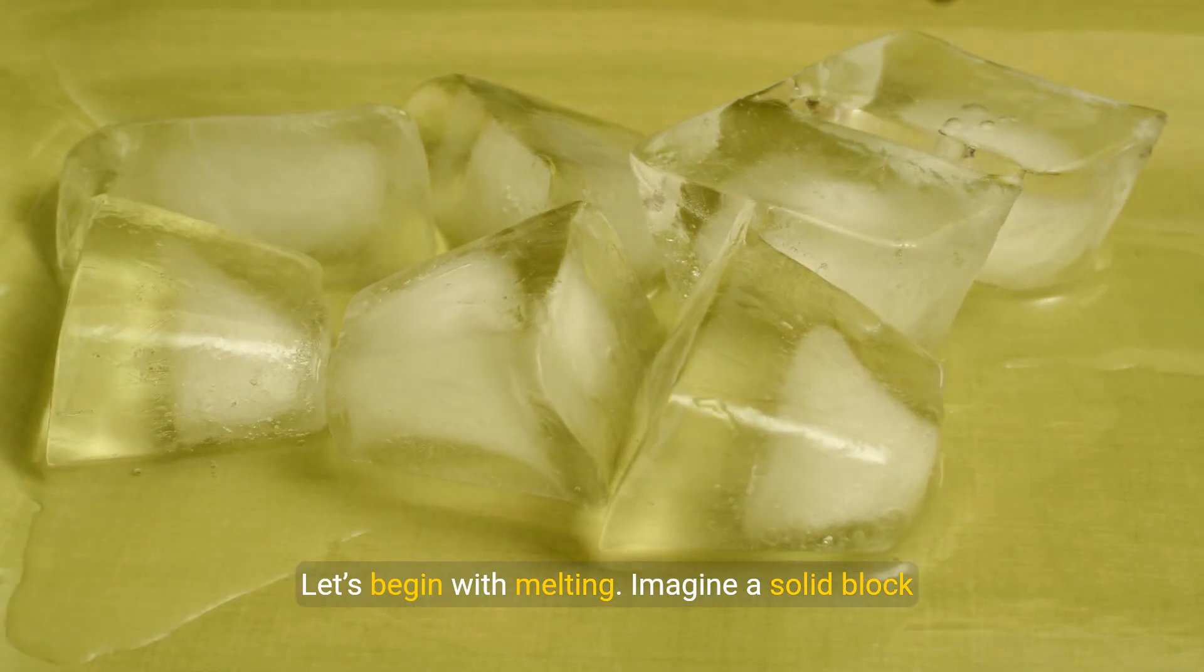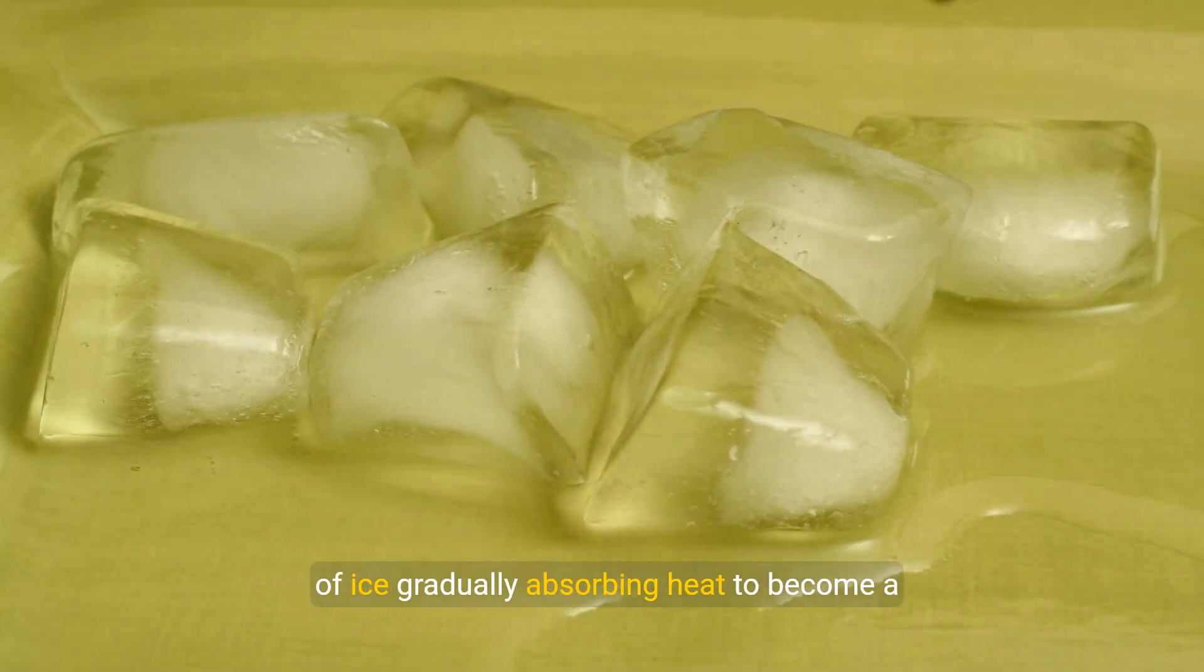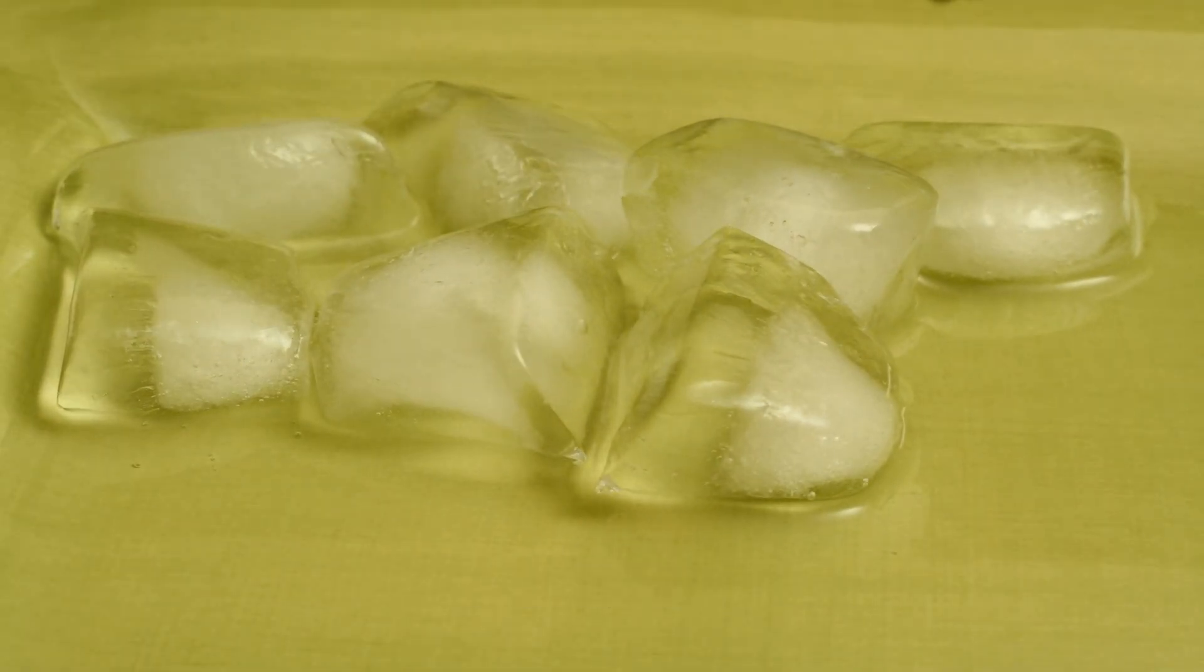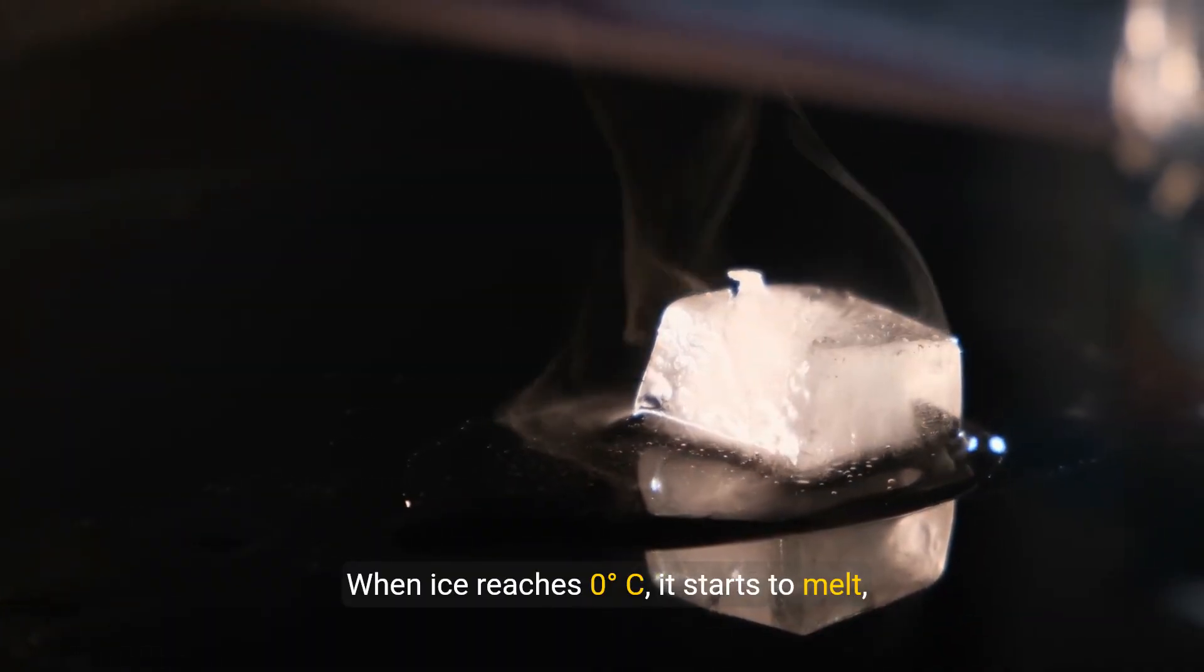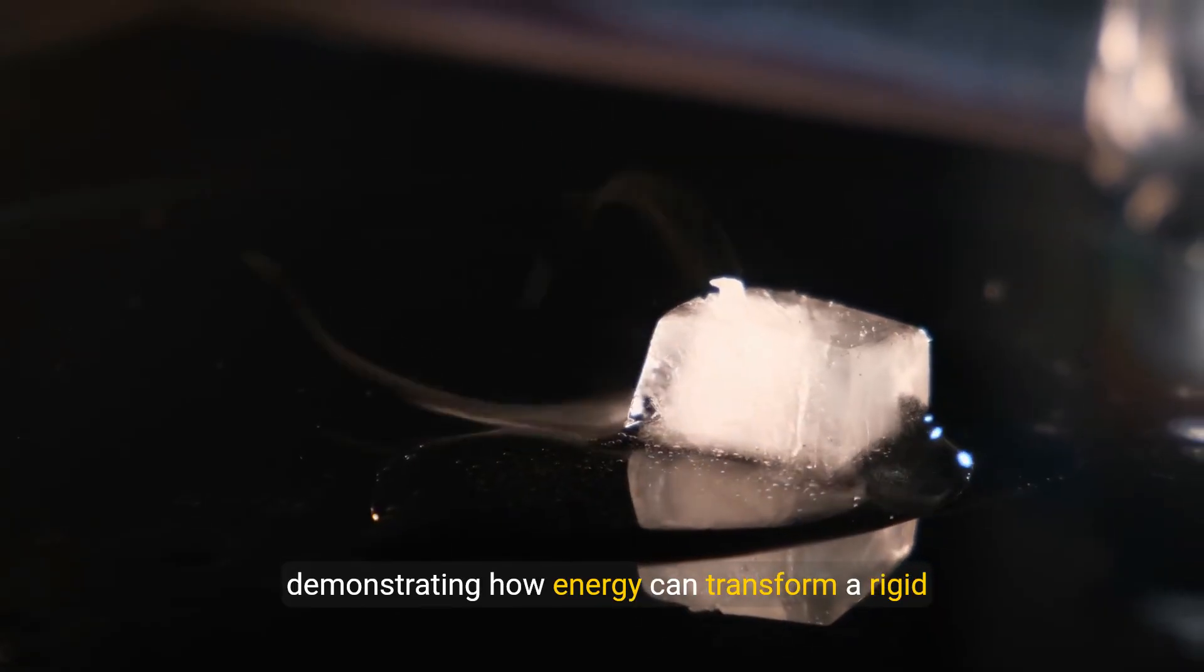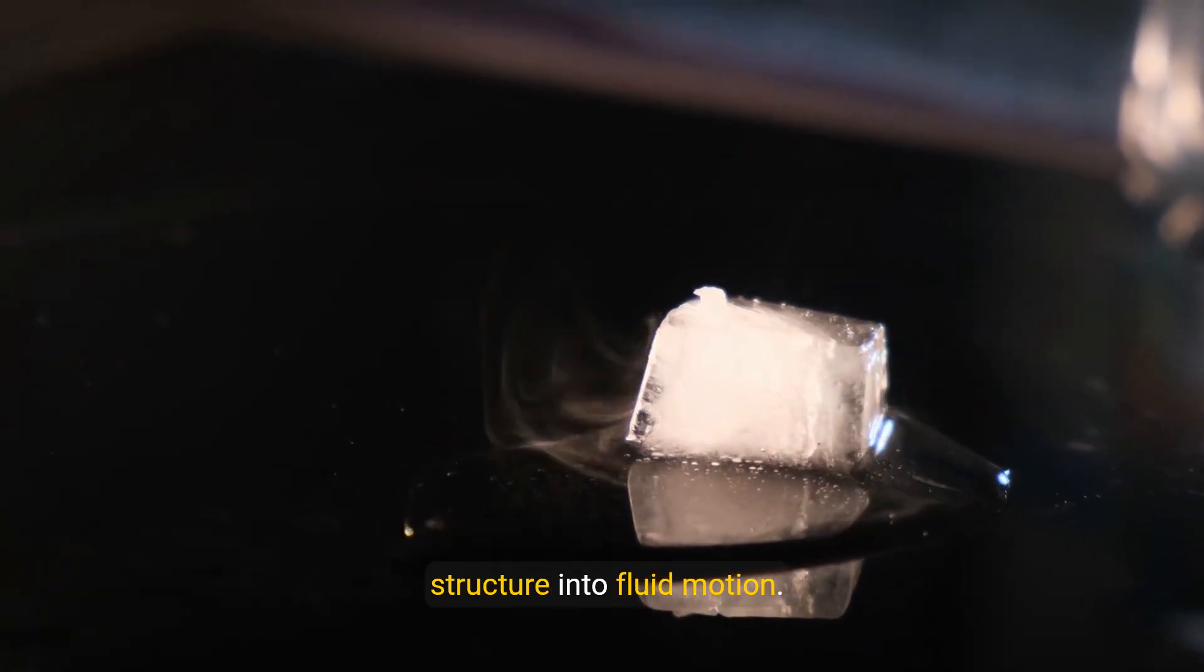Let's begin with melting. Imagine a solid block of ice gradually absorbing heat to become a refreshing liquid. When ice reaches 0 to 10 degrees Celsius, it starts to melt, demonstrating how energy can transform a rigid structure into fluid motion.